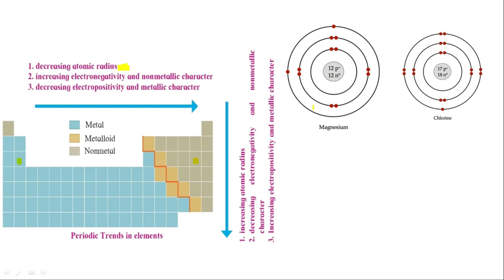Looking at the arrangement of electrons in magnesium — all 12 electrons. Now, in chlorine, the nucleus has 17 protons because its atomic number is 17. Since elements are arranged with increasing atomic number, as we go to the right, there will be more protons in the nucleus. This is a key fact: more protons means more positive charge, which means greater attractive force.